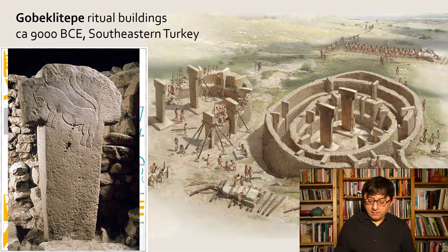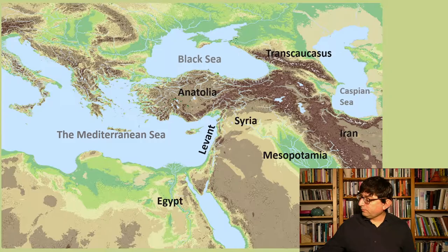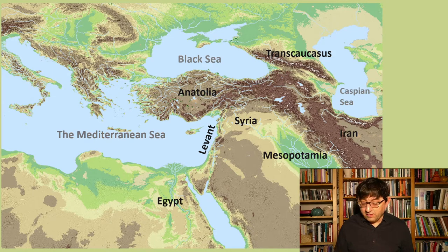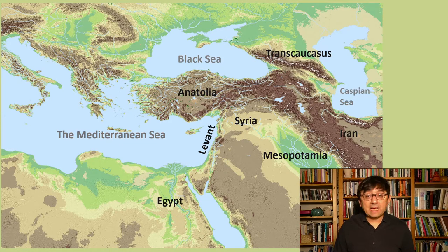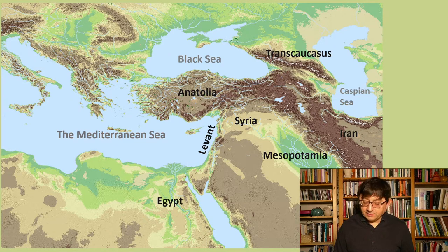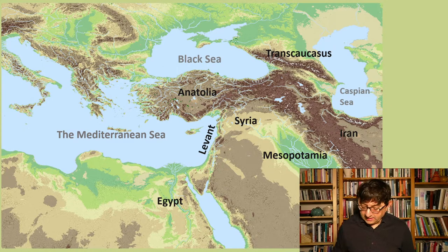This site is 11,000 years old, making it one of the oldest examples of monumental architecture we know from Near Eastern prehistory — and we're going to spend some time in the coming weeks on this. This map also shows more broadly the geographical regions we're going to cover in the class: from the Black Sea in the north to the Persian Gulf in the south, and from the Mediterranean Sea in the west all the way to the Caspian Sea in the east.